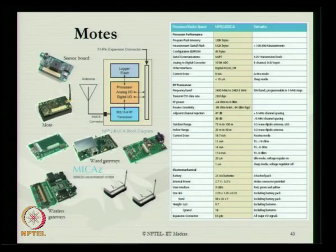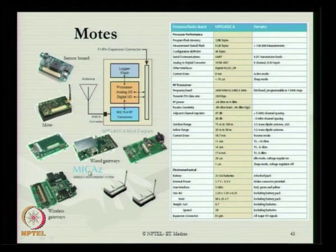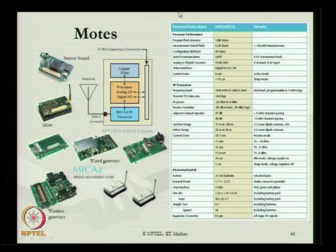Looking at the nodes used for system architecture, there are different nodes: sensor nodes, router nodes, wireless gateways, and wired gateways — all forming the group of system architecture, with their configurations and specifications available in the reference table.